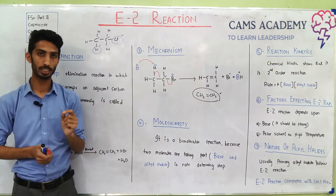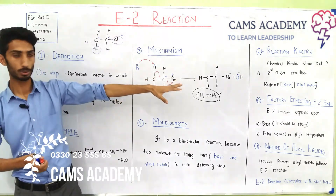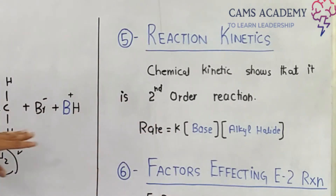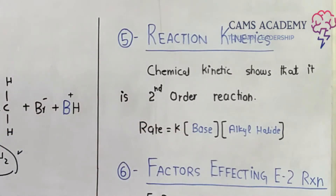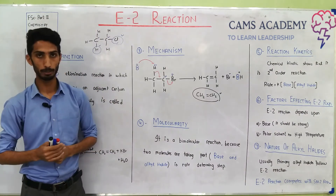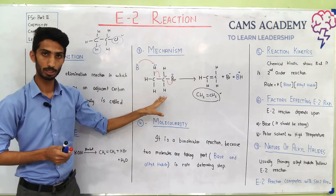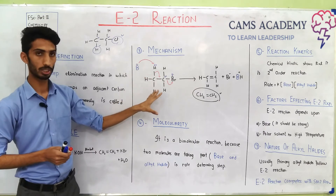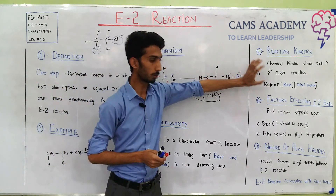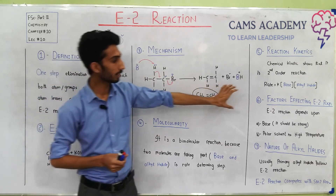Then we talk about reaction kinetics — what order of reaction it is. E2 is a second-order reaction. The rate depends on both the base concentration and the alkyl halide concentration. Comparing with E1: in E1 the rate depends only on alkyl halide, but in E2 if you change the concentration of either the base or the alkyl halide, the rate of reaction is affected. Therefore we call it a second-order reaction.